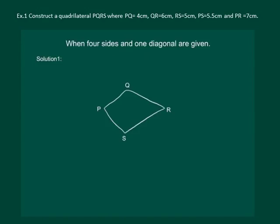Next it reads where PQ is equal to 4 cm. So let us mark it. QR is equal to 6 cm. RS is equal to 5 cm.